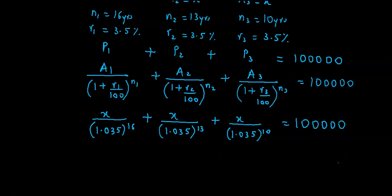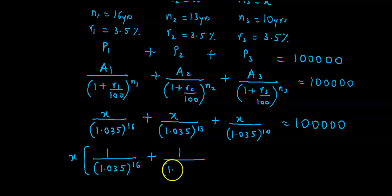Now from this we take x as common factor. Then this will be 1 upon 1.035 raised to 16, plus 1 upon 1.035 raised to 13, plus 1 upon 1.035 raised to 10 is equal to 1,00,000.